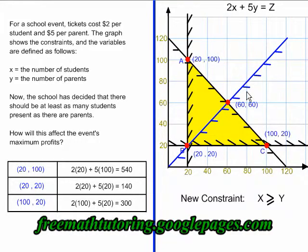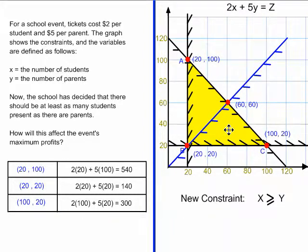The new line is this blue line, and it is shaded below and to the right. That changes the shape of my polygon. It creates a new vertex, which I have right here. And the new vertex is X equals 60, Y equals 60. I am going to shade a new polygon in a different color so that we can see what the polygon looks like now.